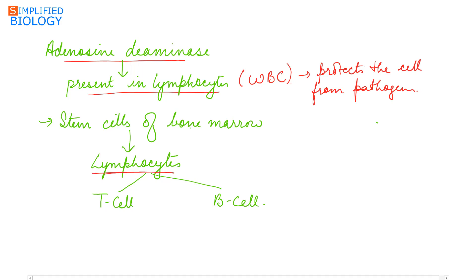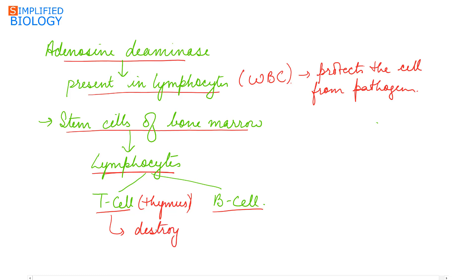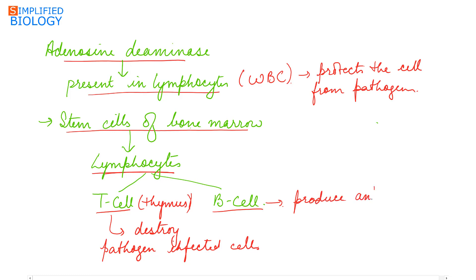These lymphocytes are synthesized by the stem cells of the bone marrow. The lymphocytes then get specialized to form T cells and B cells. T cells are formed in the thymus and destroy pathogen-infected cells, while B cells produce antibodies that neutralize foreign substances. Due to the absence of adenosine deaminase enzyme, functional lymphocytes are not formed, hence affecting the immune system and leaving the body unable to respond to foreign pathogens.